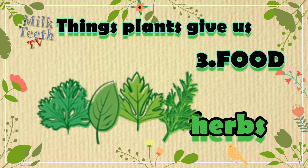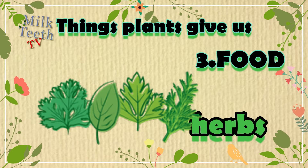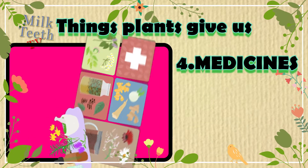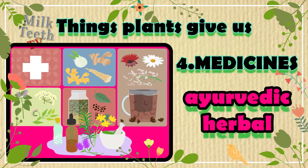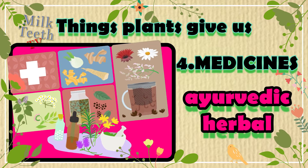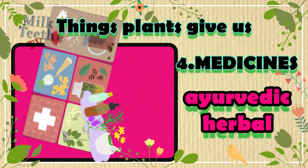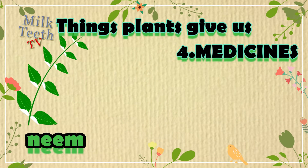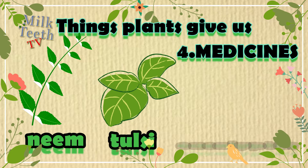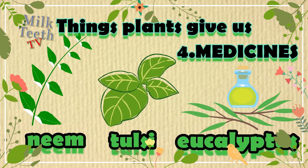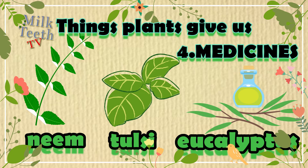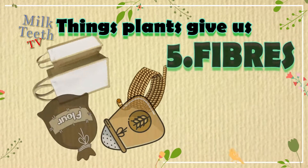Number four: medicines. We get a whole lot of ayurvedic and herbal medicines from plants. We get neem, tulsi, and eucalyptus oil from plants, which are used as medicines.